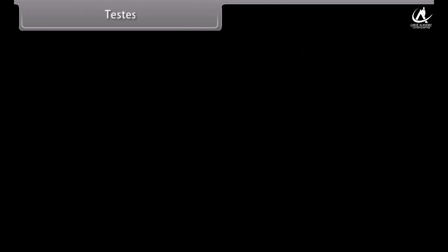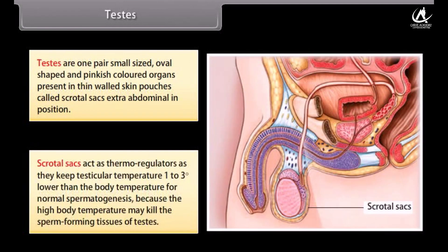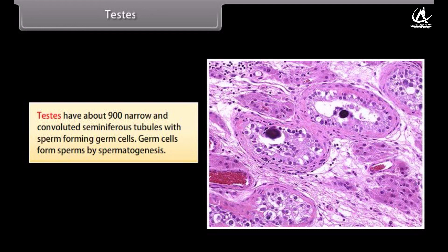Testes are one pair of small, oval-shaped, pinkish colored organs present in thin skin pouches called scrotal sacs, which are extra-abdominal in position. Scrotal sacs act as thermoregulators, keeping testicular temperature 1 to 3 degrees Celsius lower than body temperature for normal spermatogenesis, because high body temperature may kill the sperm-forming tissues. Testes have about 900 narrow convoluted seminiferous tubules with sperm-forming germ cells that produce sperms by spermatogenesis.